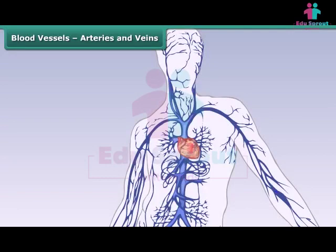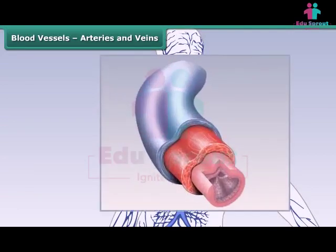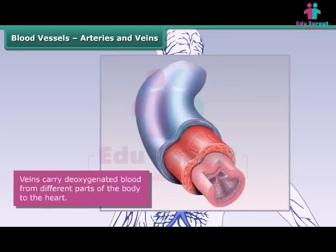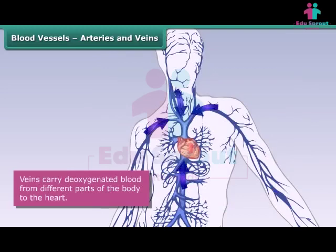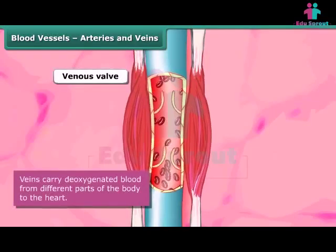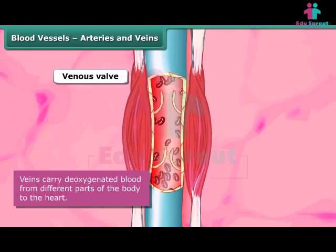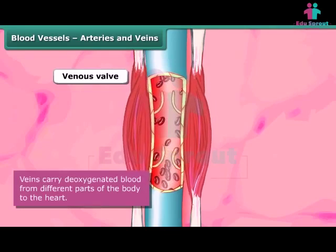Veins are blood vessels with thin walls. They are close to the skin and carry deoxygenated blood from the different parts of the body to the heart. Most veins have flaps known as venous valves that ensure blood flows only towards the heart. These valves prevent blood from flowing back. The pressure of blood in the veins is lower than it is in the arteries.